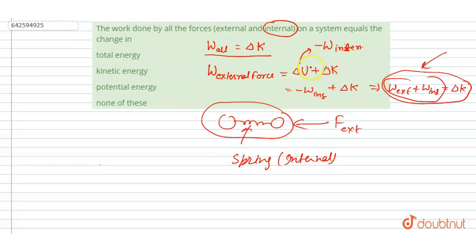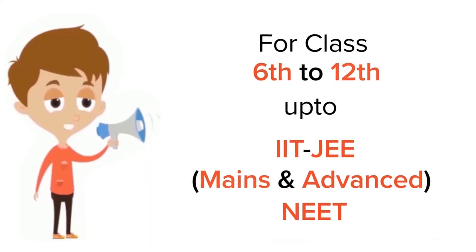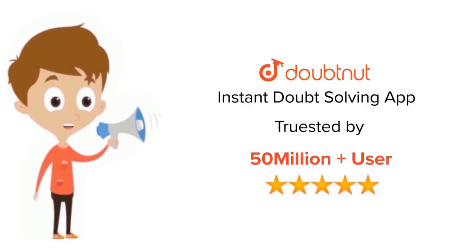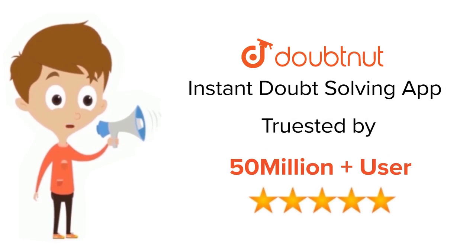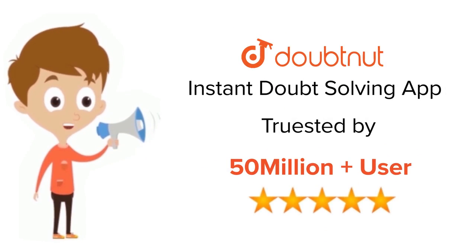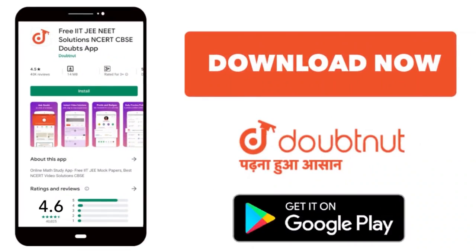So option B will be the correct answer. Simple! Thank you. For class 6 to 12, IIT JEE, and NEET level — trusted by more than 5 crore students — download the DoubtNut app today.